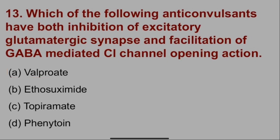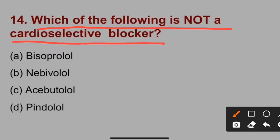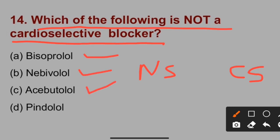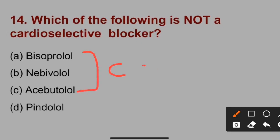Question number 14: Which of the following is not a cardioselective beta blocker? There are two types of beta blockers — non-selective and cardioselective. Bisoprolol, nebivolol, and acebutolol are all cardioselective beta blockers. However, pindolol is a non-selective beta blocker. So option D is correct.